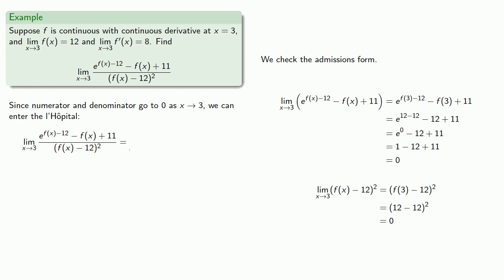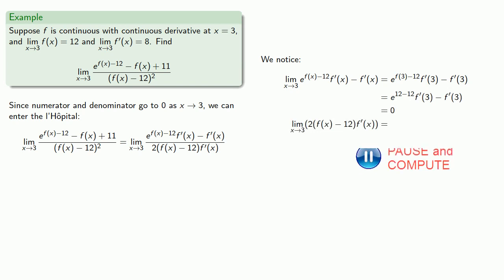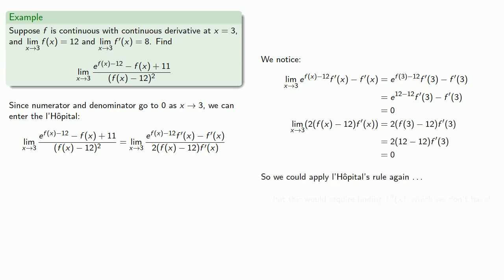So we'll differentiate numerator and differentiate denominator. And let's take a look. As x goes to 3, our numerator goes to 0 and our denominator goes to 0. So we could apply L'Hopital's rule again, but this would require finding the second derivative of f, which we don't have.